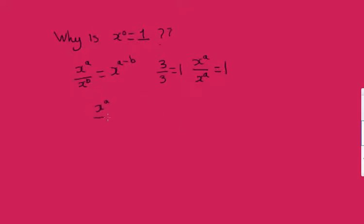Now let's look at x to the a over x to the a. If we use this rule here, we can rewrite that as x to the a minus a, which equals x to the zero.